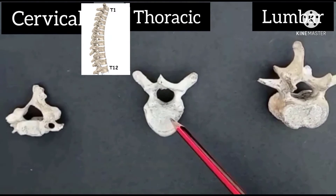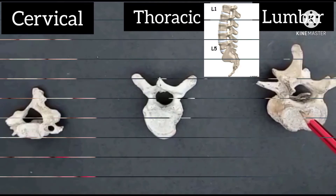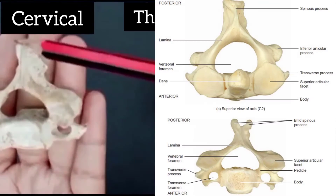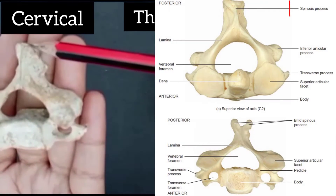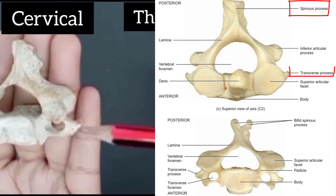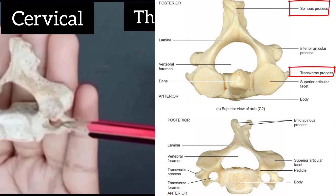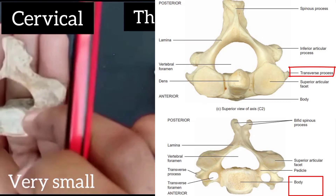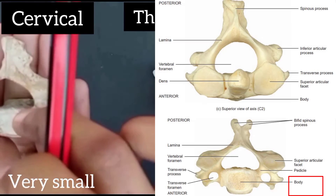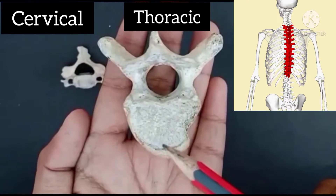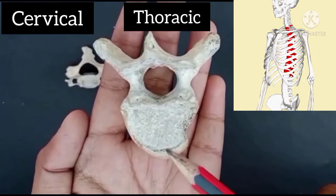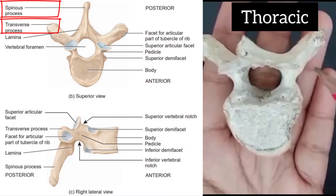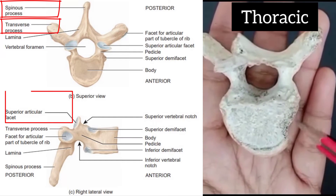There are seven cervical vertebrae, twelve thoracic vertebrae, and five lumbar vertebrae. The parts of the cervical bone are: spinous process, transverse process, neural arch, and body. The body structure is very small.